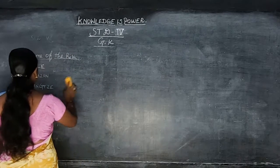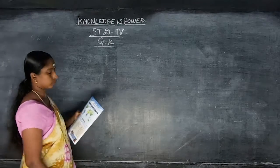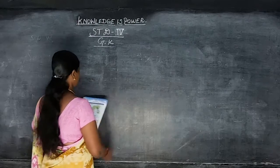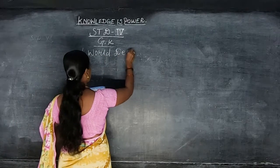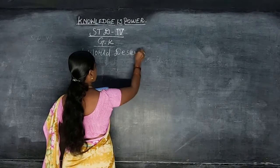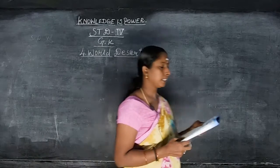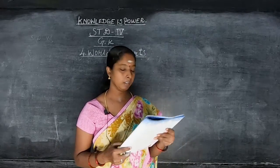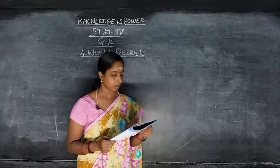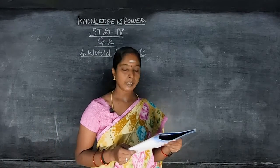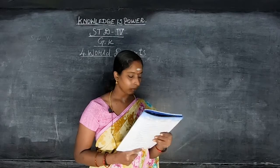Fourth lesson: World Deserts. Tamil meaning: Palaivana. Deserts are areas that receive little rain and offer harsh living conditions. Life is hard for human beings, animals and plants. A list of the most important deserts in the world.